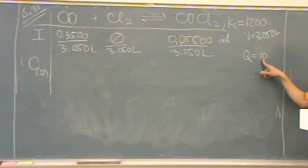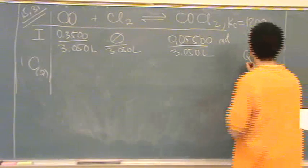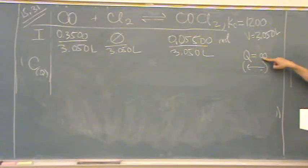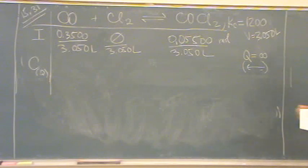Well, for this to get smaller, I need more reactants. Is that okay? So, it has to shift towards the reactants or to the left. So, I'll put the shift down here. So, when Q, if you want to write it this way, when Q is bigger than K, it shifts to the reactants. When Q is bigger than K, it shifts towards the reactants.